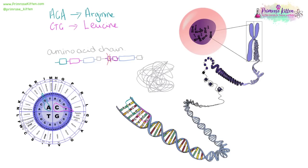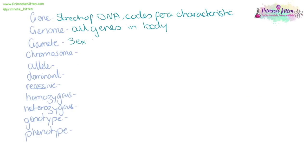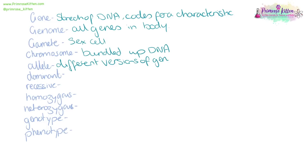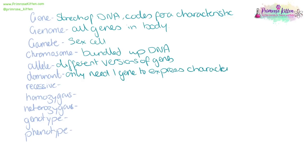There is a massive amount of DNA in each of our cells, and only some of it is useful. Some sections are non-coding — basically junk DNA just getting in the way. A gamete is a sex cell — in humans, that's the sperm or the egg. A chromosome is bundled-up DNA. Alleles are different versions of genes. Dominant means you only need one gene to express the characteristic. Recessive means you need two identical recessive genes to express the characteristic.